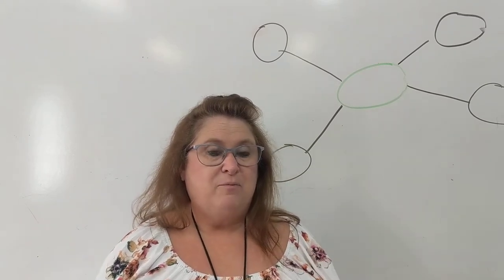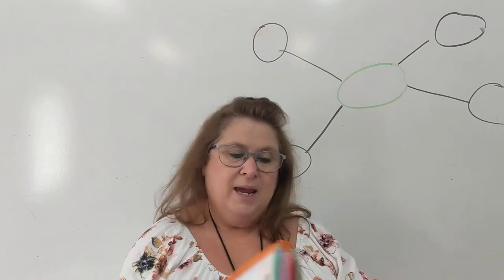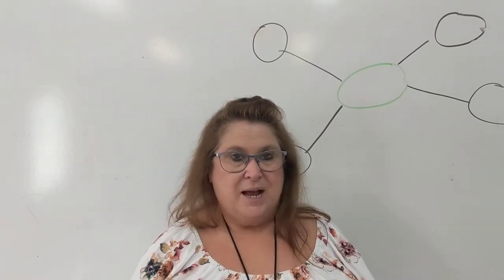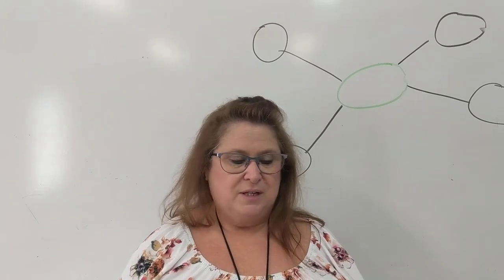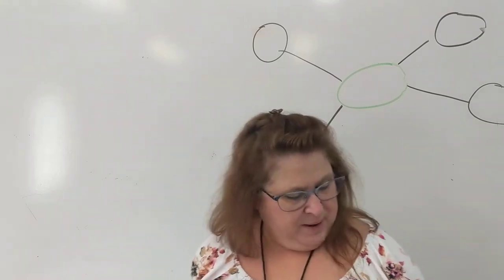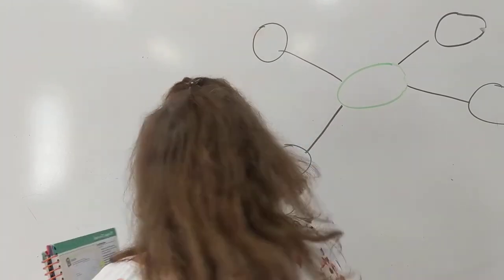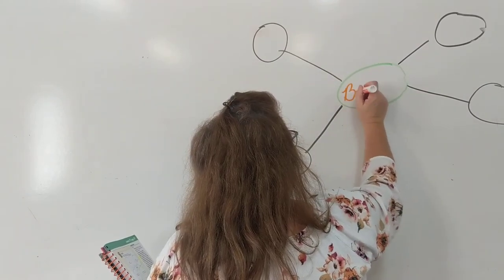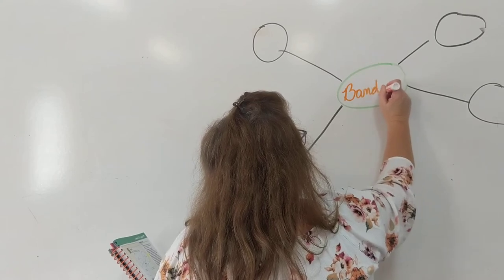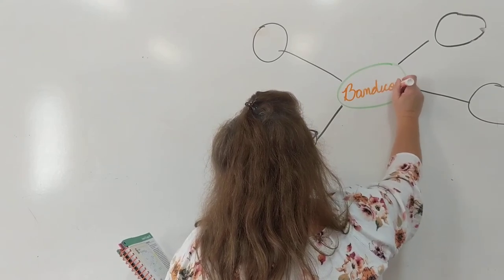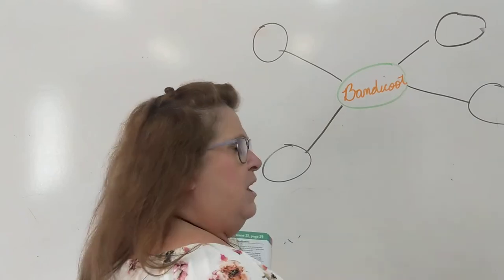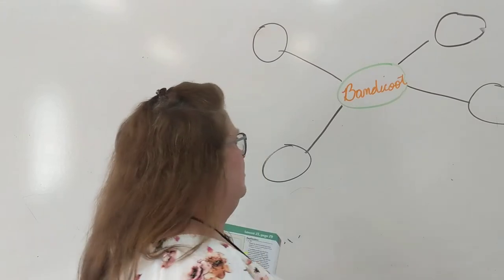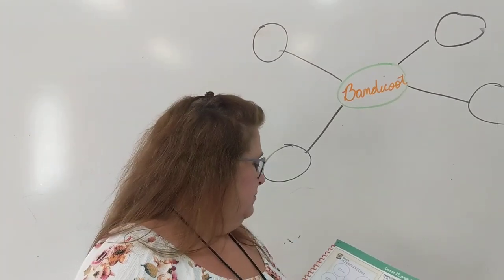Put your name and date at the top of page 29 — and leave that page in your book. Name and date at the top. You may pause the video while you do so. If you notice on page 29, you have some bubbles on your paper. In the middle of your bubbles, I want you to write the word bandicoot. We're going to write one detail about the bandicoot in each little circle coming off bandicoot.